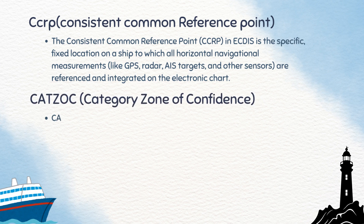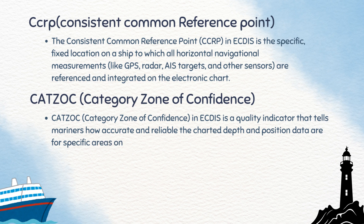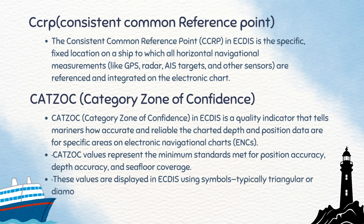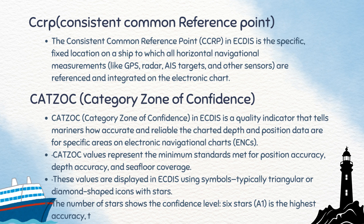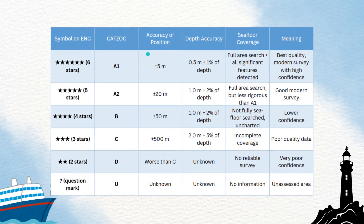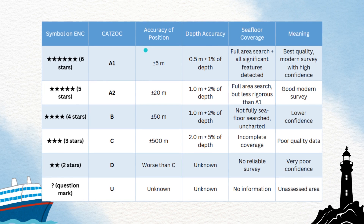CATSOC stands for Category Zone of Confidence. In ECDIS, it is a quality indicator that tells mariners how accurate and reliable the charted depth and position data are for specific areas on electronic navigational charts, ENCs. CATSOC values represent the minimum standards met for position accuracy, depth accuracy, and seafloor coverage. These values are displayed in ECDIS using symbols, typically triangular or diamond-shaped icons with stars. The number of stars shows the confidence level: 6 stars, A1, is the highest accuracy; 2 stars, D, is the lowest; and U stands for Unassessed Areas. A complete CATSOC chart detailing star classifications, position accuracy, depth accuracy, seabed coverage, and their corresponding meanings is presented — you may pause or capture a screenshot for reference.